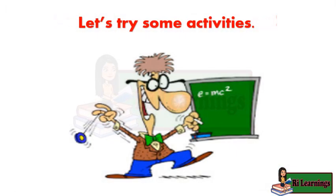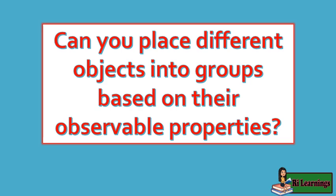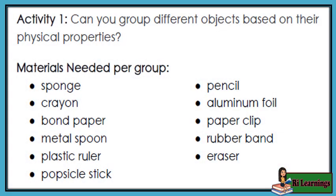Let's try some activities. Can you place different objects into groups based on their observable properties? Materials needed per group: sponge, crayon, bond paper, metal spoon, plastic ruler, popsicle stick, pencil, aluminum foil, paper clip, rubber band, and eraser.